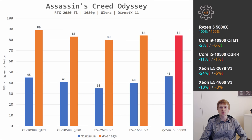Assassin's Creed Odyssey uses multiple CPU cores but also relies on IPC, memory latency, and frequency. The Ryzen 5 5600X delivers very similar performance to the Core i9-10900 QTB1 — Core i9 wins 6% on average but loses 2% in minimal FPS. The Core i5-10500 QSRK is surprisingly decent, losing only 11% and 1%. The Xeon E5-2678v3 falls further behind — 1% lows are 24% worse and averages 5% worse. The Xeon E5-1660v3 has identical average FPS but 13% worse minimal FPS.